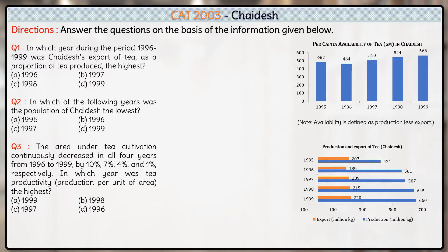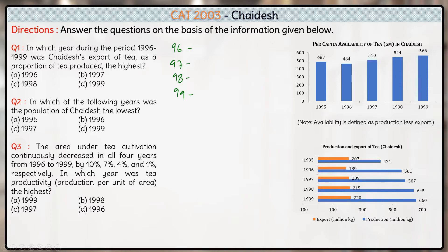The first question is: in which year during the period 96 to 99 was Chayadesh's export of tea as a proportion of tea produced the highest? So we have to calculate the ratio of exports to total production, and find which year this ratio is highest. We have 96, 97, 98, and 99 as the four options. So in 96 the ratio is 189 to 561.